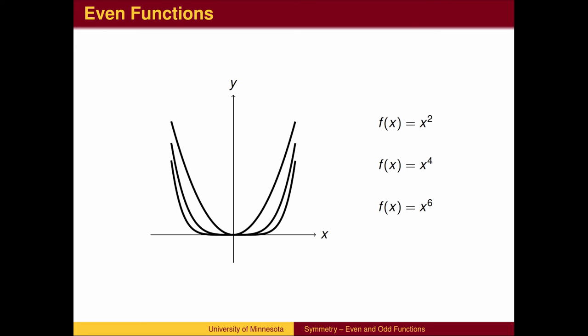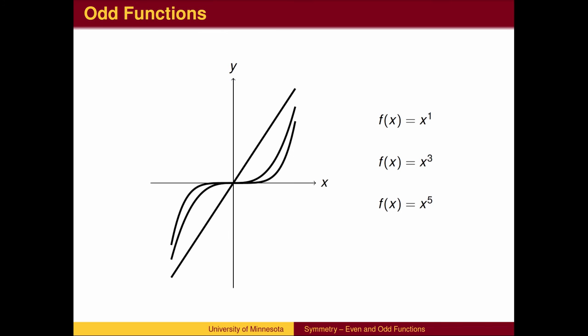For all of the even powers of x, the graph is symmetric with respect to the y-axis. For this reason, we call a function symmetric with respect to the y-axis an even function. For all of the odd powers of x, the graph is symmetric with respect to the origin. For this reason, we call a function symmetric with respect to the origin an odd function.